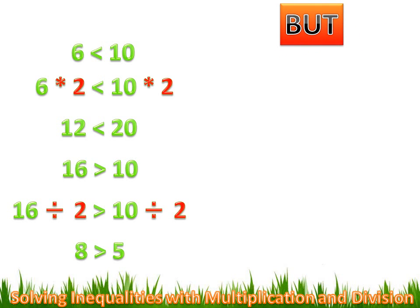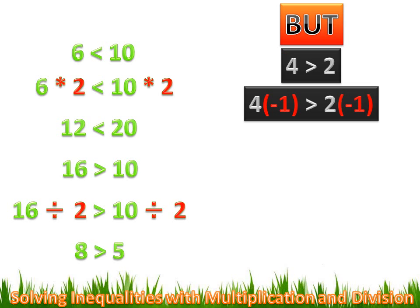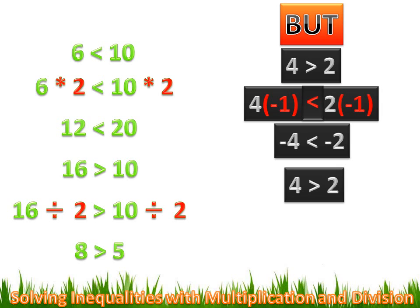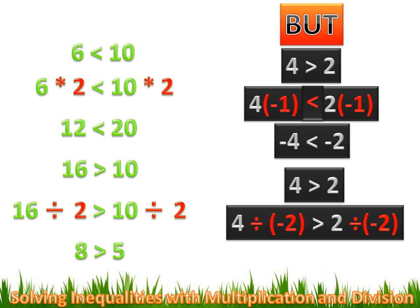But if you're using negative numbers and multiplying or dividing in an inequality, you need to reverse the inequality sign. For example, 4 is greater than 2, but if you multiply both sides by -1, you must reverse the sign — because -4 is less than -2. Similarly, if you divide both sides of 4 > 2 by -2, you reverse the sign, giving -2 is less than -1.